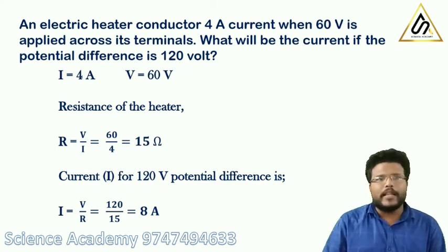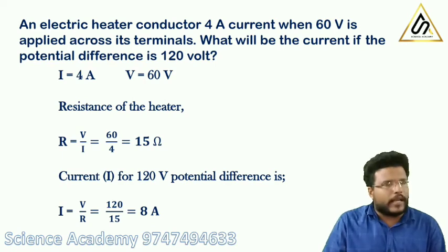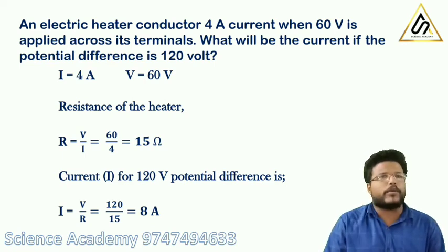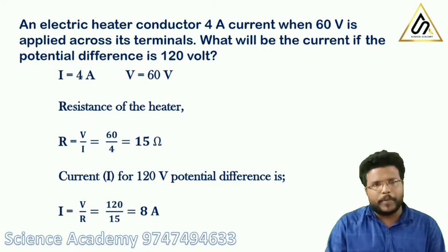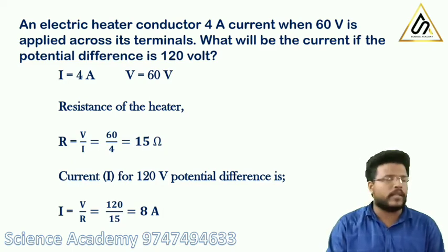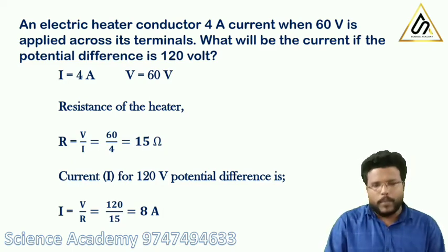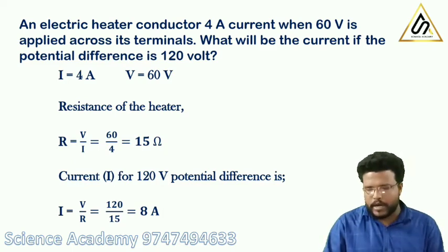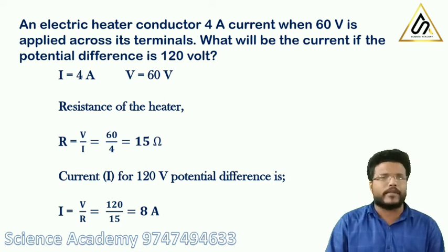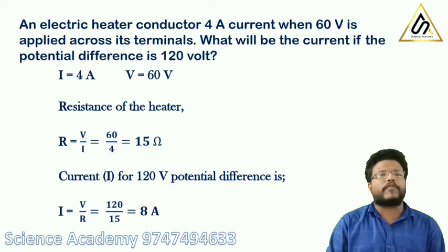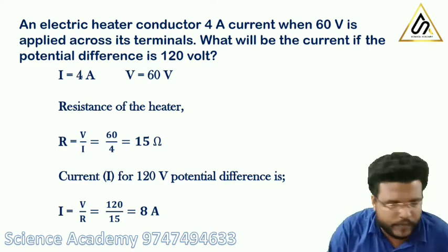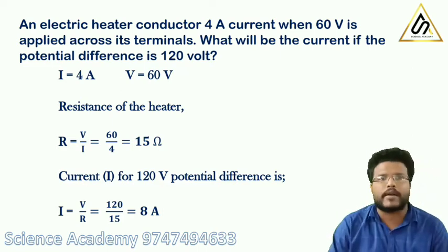Now we need to find the current when the potential difference is 120V. Using I equals V by R, with R equal to 15 ohm, I equals 120 divided by 15, which gives 8 ampere. This confirms that potential difference is proportional to current.